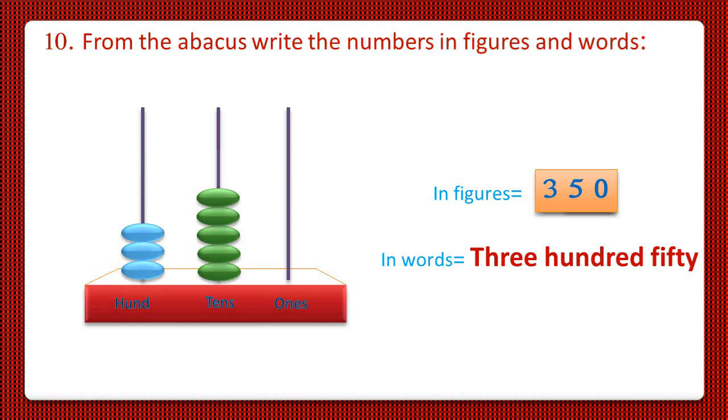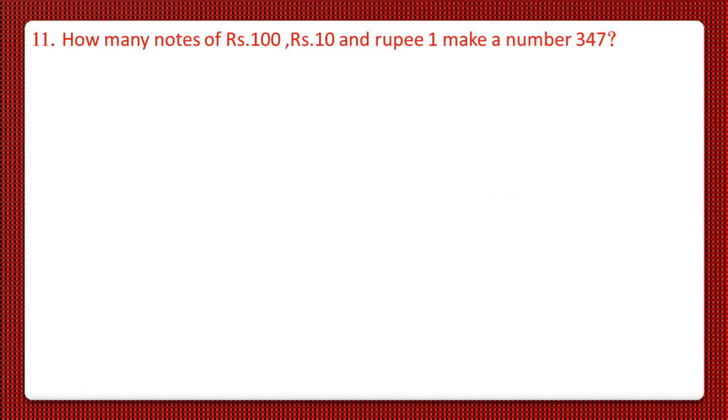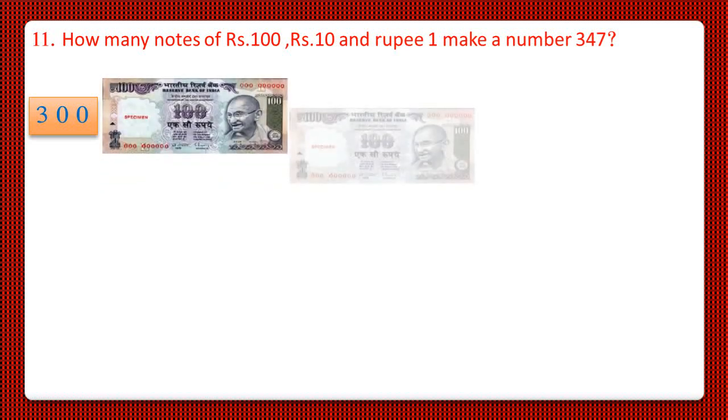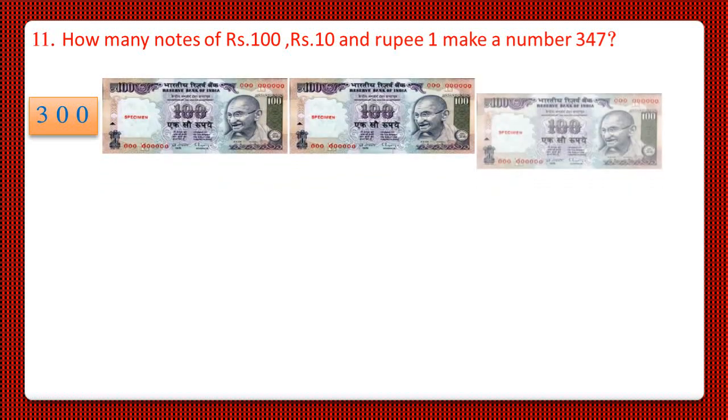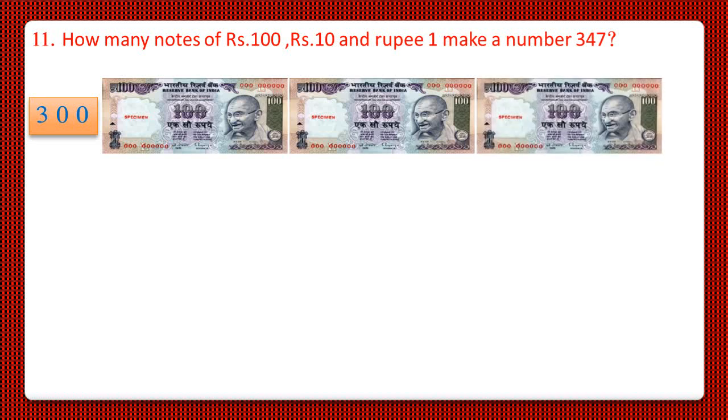Now let us move to question number 11. How many notes of Rs. 100, Rs. 10 and rupee 1 make a number 347? So for 300, let us take the Rs. 100, Rs. 100, Rs. 200 and Rs. 300. So 3 hundred rupee notes make Rs. 300.